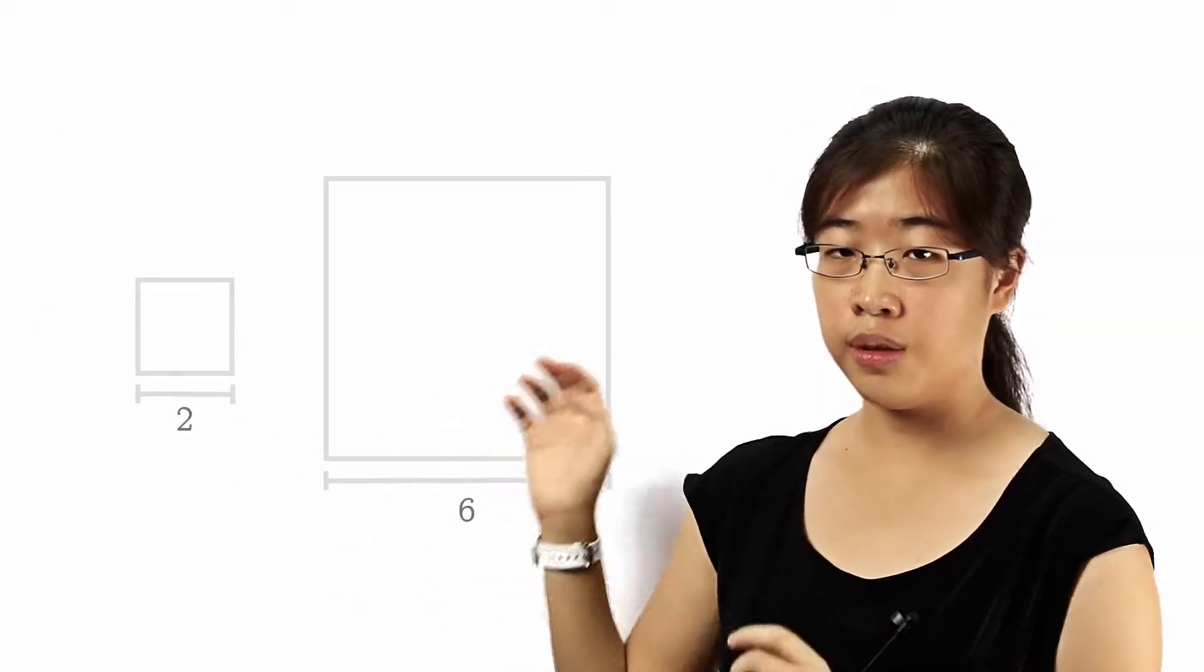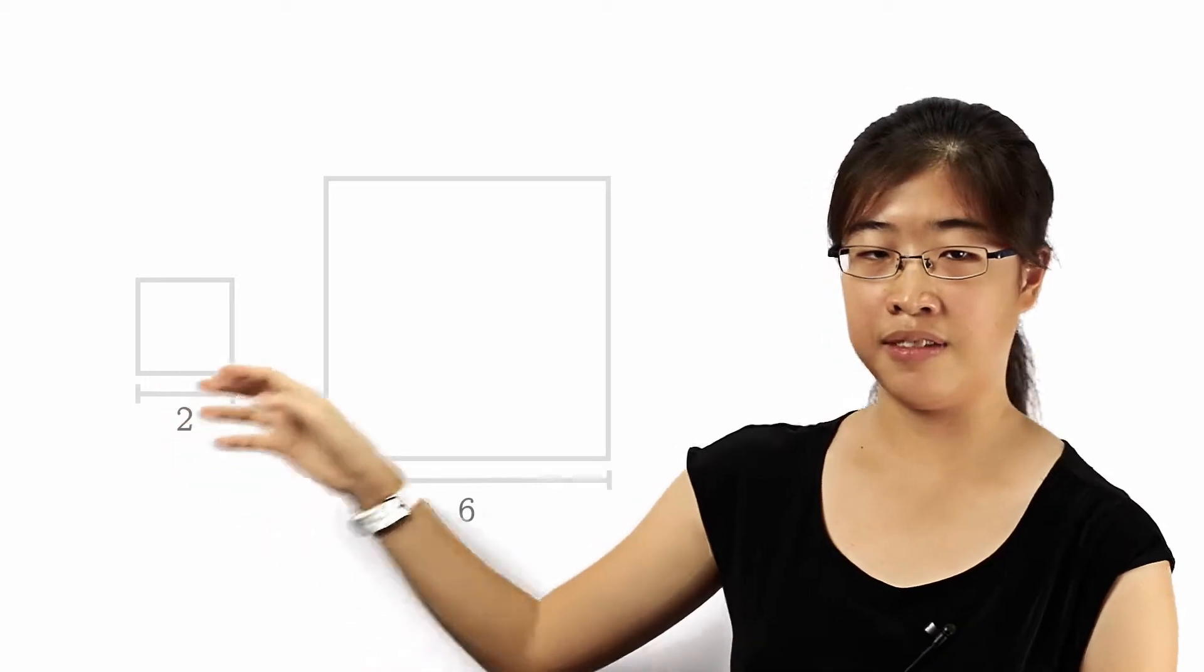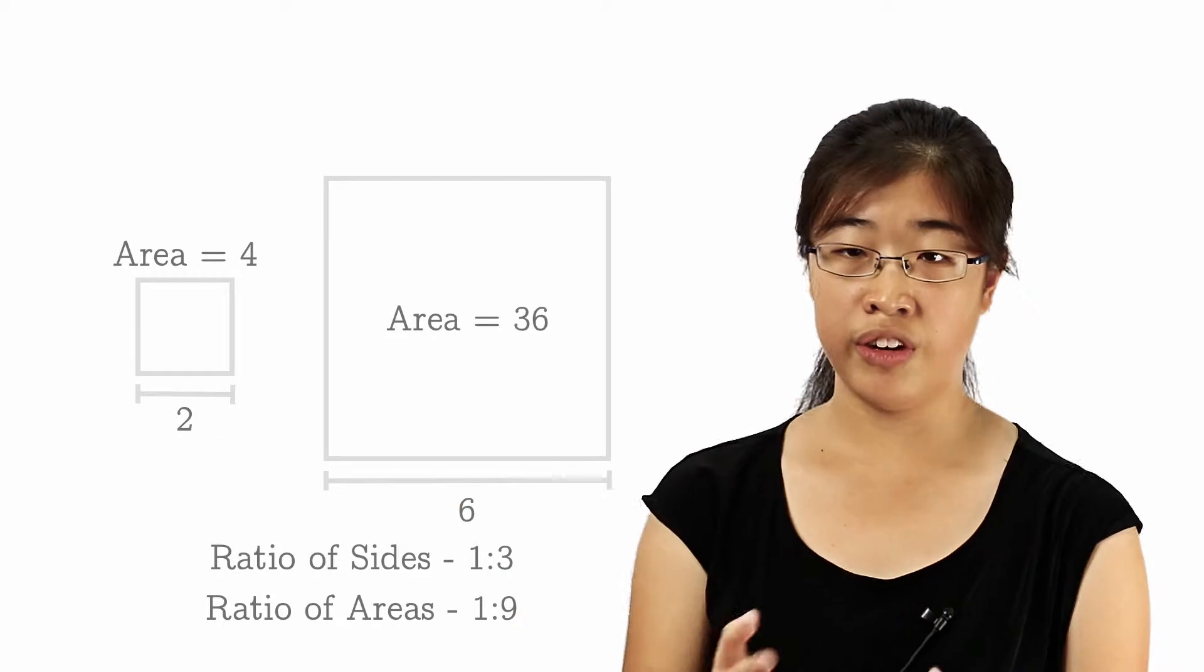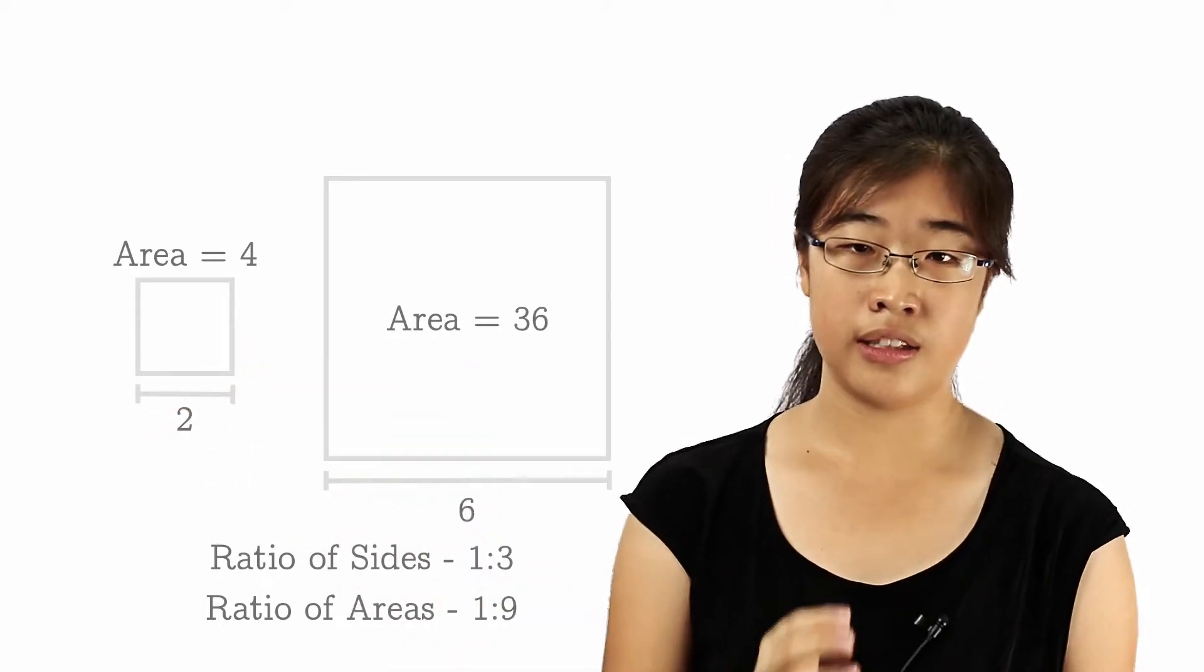Look at another example. Here are two squares. One with side length 2 and one with side length 6. The ratio of their corresponding sides is 1 to 3, while the ratio of their areas is 1 to 9. Again, 9 is the square of 3.